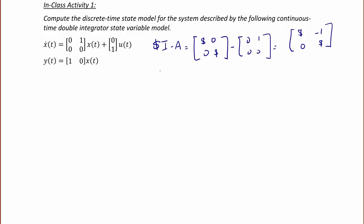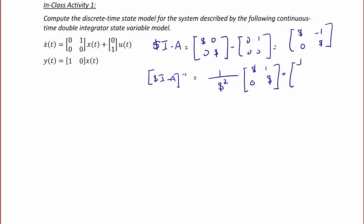Then we find the inverse of (sI minus A). The determinant of this 2-by-2 matrix is 1 over s squared. We swap the first and fourth terms and negate the second and third terms, giving (1/s²) times [s, 1; 0, s], which simplifies to [1/s, 1/s²; 0, 1/s].